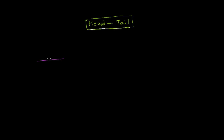Let's say this is representing vector A. And let's say I have vector B here. If I have to add these two vectors, then I have to use head to tail.